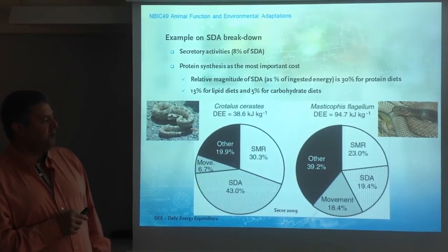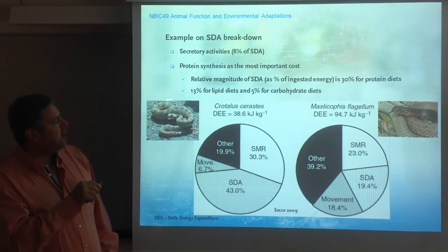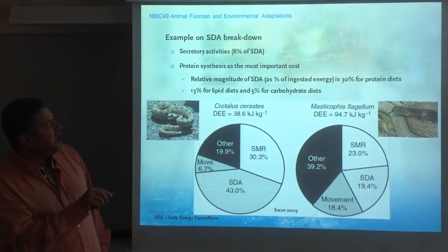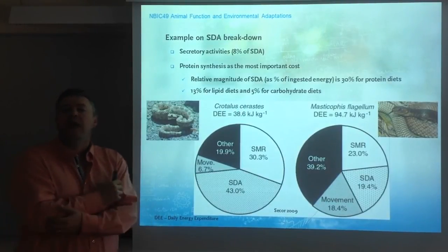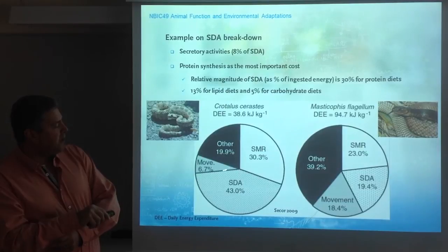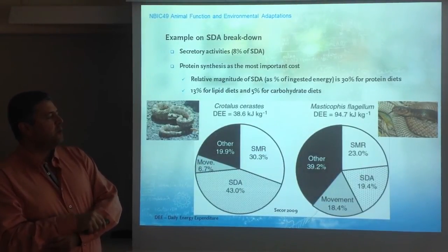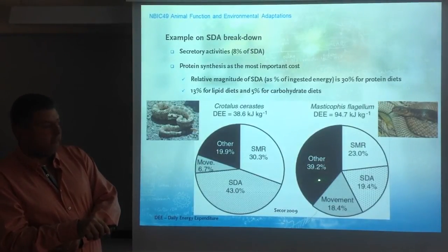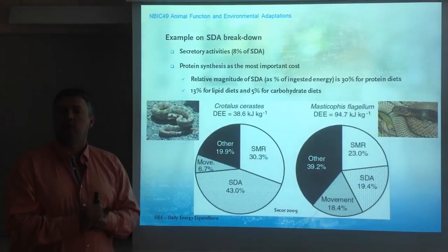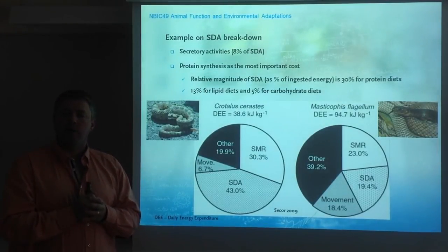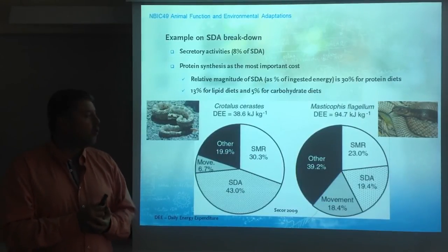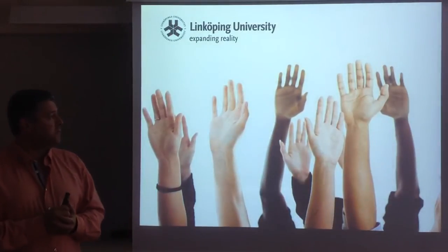Here you have the example in two different snake species. In one — Crotalus cerastes, the rattlesnake — the SDA accounts for 43% of the daily energy expenditure (DEE). The standard metabolic rate is about 30%, activity costs about 7%, and other costs about 20%. This is slightly different for the other species shown. So to wrap this up, specific dynamic action is the cost of digestion and absorption, divided into different components. Of course, it depends on the quality of the food — the extent of the specific dynamic action will be larger or smaller accordingly. And that's the end of this lecture. Thank you very much.